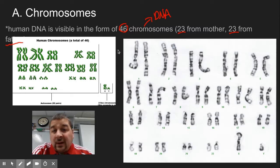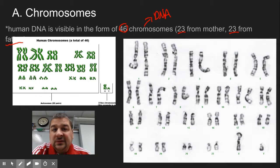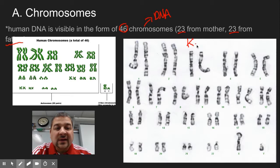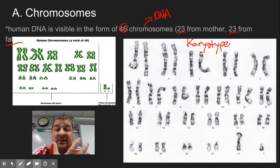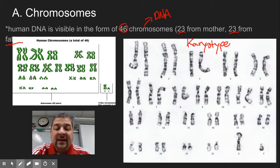We actually look at these when we deal with chromosomal disorders. Sometimes when they do genetic testing, they'll do what's called a karyotype, where they will take all the chromosomes or DNA in a cell. And during mitosis, it coils up real tight, and they take a picture of them. They don't all line up nice and neat — they actually have to use a computer or cut them and put them together based on size.